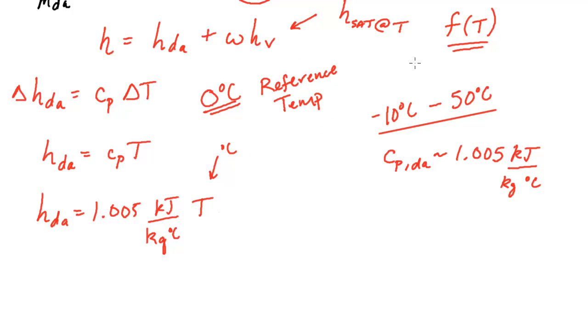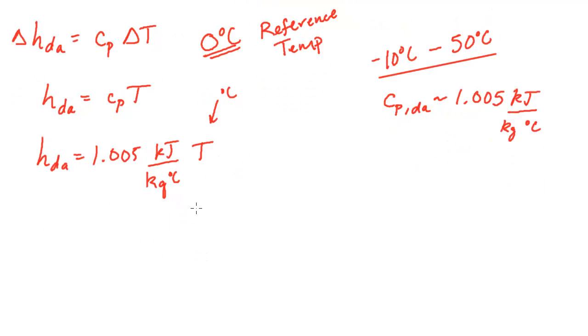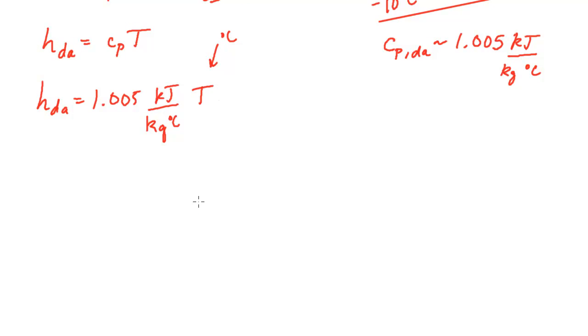And all we need now is this H at saturation with temperature, or H at vapor to be more precise. Now we took 0 degrees C as our reference temperature, and the enthalpy of water vapor at 0 degrees C, that is around 2,500 kilojoules per kilogram degree C. You can put a 0.9 here if you'd like, or 2,501, I've also seen this.